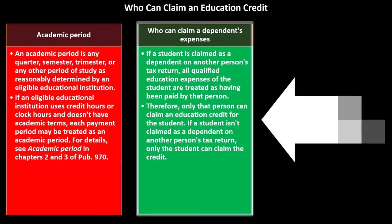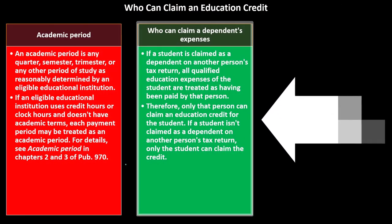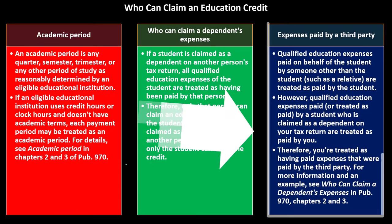Who can claim a dependent's expenses? If a student is claimed as a dependent on another person's tax return, all qualified education expenses of the student are treated as having been paid by that person. Therefore, only that person can claim an education credit for the student. If a student isn't claimed as a dependent on another person's return, only the student can claim the credit. Typically, if the student is claimed by a parent, the credit would be on the parent's return.